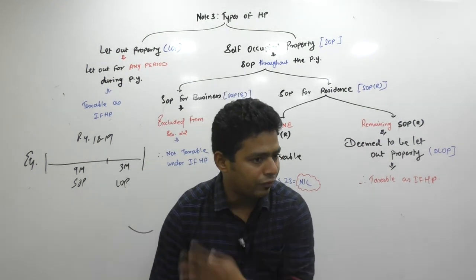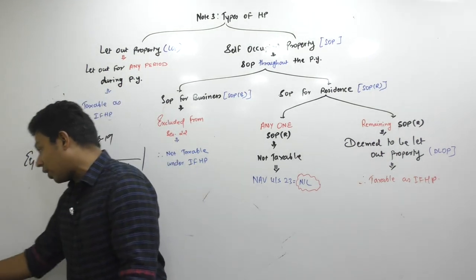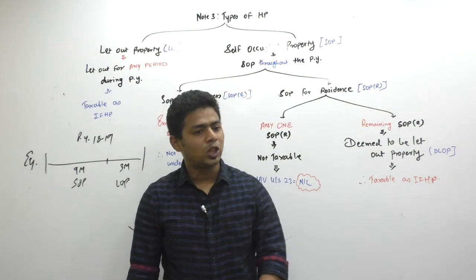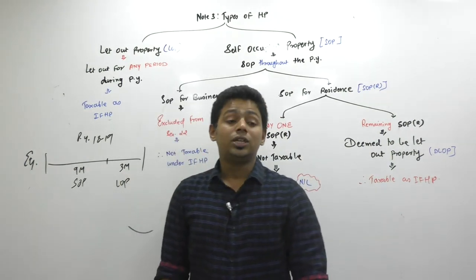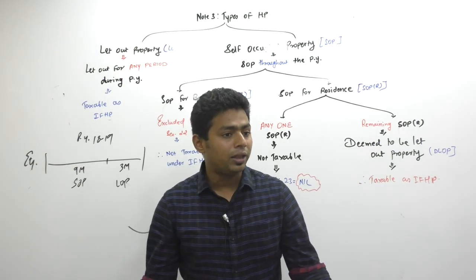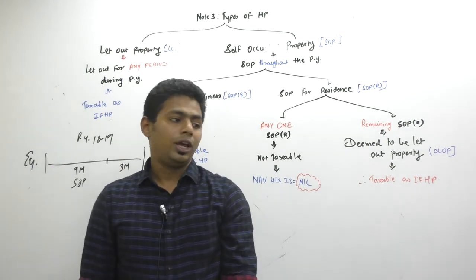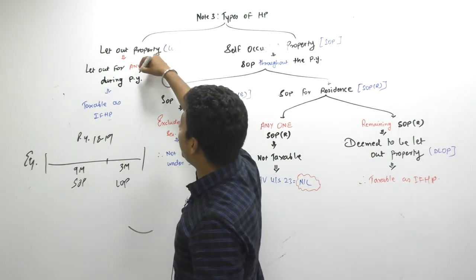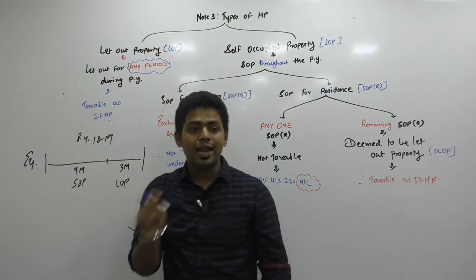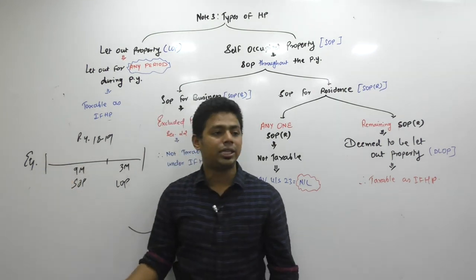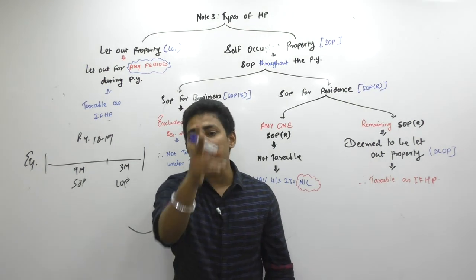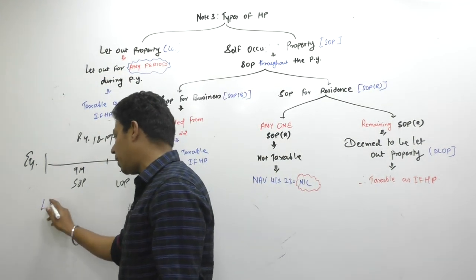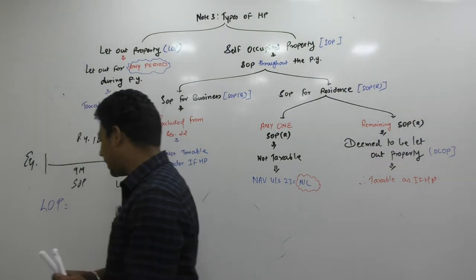Can you say partly SOP, partly LOP? The answer is no. You have to give one answer — either it is SOP or it is LOP. You cannot assume it as SOP because it had the majority period as SOP. It has to be called LOP. Because the definition says: if you let out for any period — any period — even if it is SOP for 11 months 29 days and let out for only 2 days in a year, still you have to pay tax on the full year's rent. The property has become a let out property — I call this a single status property.